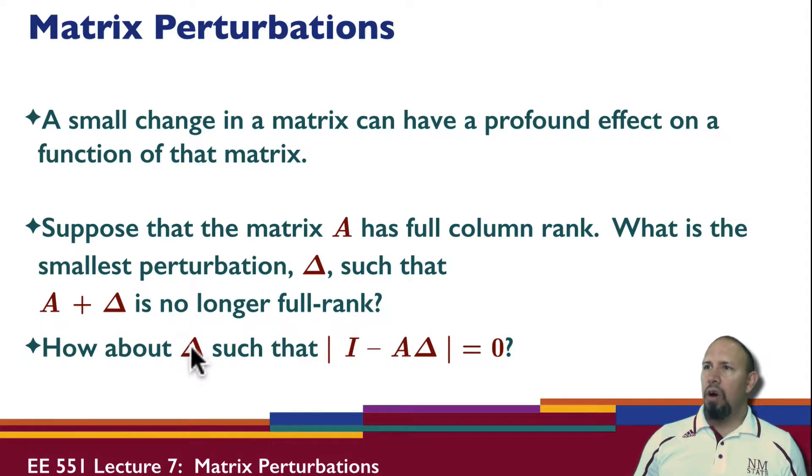Or suppose now, so that's the first problem, that's an additive type of perturbation. We can have a multiplicative type of perturbation. So here, A is multiplying by our uncertainty, our perturbation matrix. And so what is the smallest delta so that this determinant is equal to zero? So it turns out this quantity is important for us because later on we're going to be looking at stability of systems, and this kind of quantity is going to have an impact on whether our system is robustly stable or not.